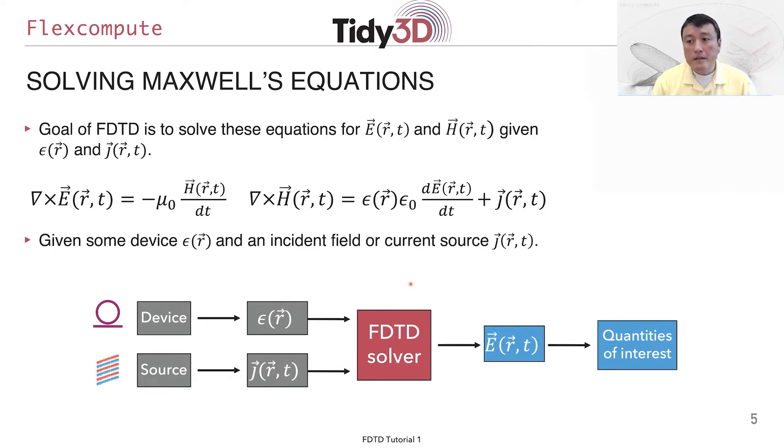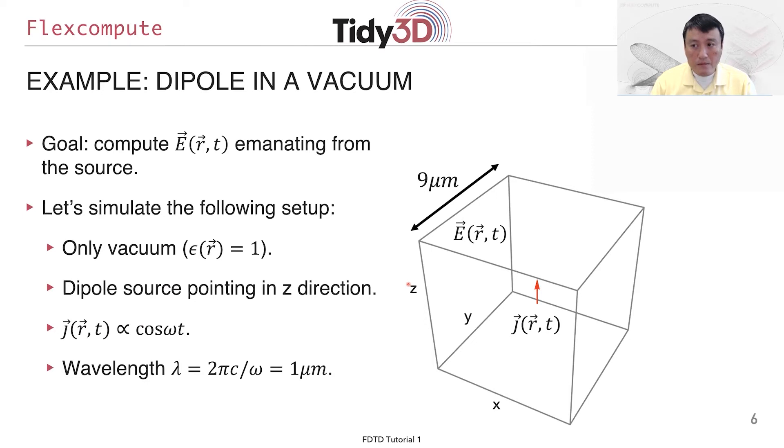So as the first illustration of the FDTD method, we're going to solve an example that you probably have all learned in your electromagnetic class, and that is to simulate the emission pattern of a dipole in a vacuum. So we would like to compute the electric field E(r,t) that's generated out of an oscillating dipole. And so in this setup, we're going to set it up so that the permittivity is one everywhere, relative permittivity is one everywhere, so it's vacuum. And we position the dipole source, and we choose the dipole source to be oscillating harmonically as a function of time, and the oscillation frequency correspond to a free space wavelength of one micron.